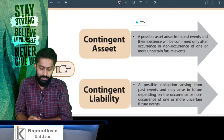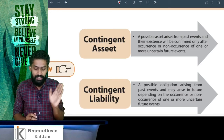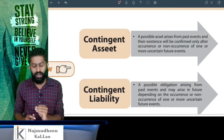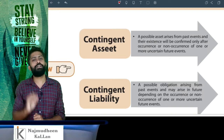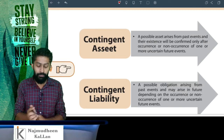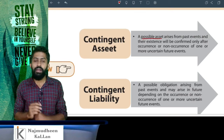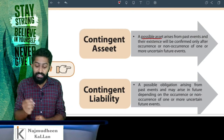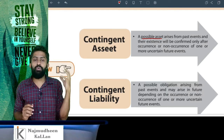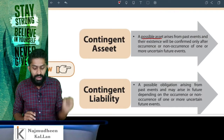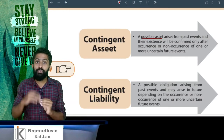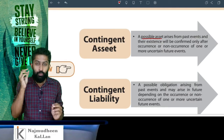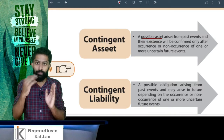Contingent Asset means a possible asset that arises from past events, and its existence will be confirmed only after the occurrence or non-occurrence of one or more uncertain future events. We are going to talk about a possible asset — not an actual asset — but a contingent asset that arises from past events.